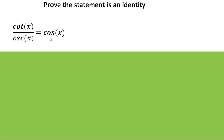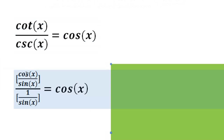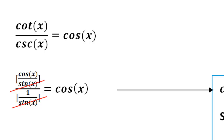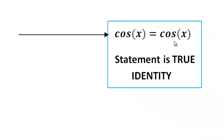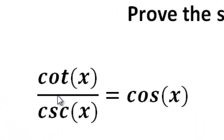There's nothing we can do with the right side, so let's work on the left. Rewriting cotangent as cosine over sine, and cosecant as 1 over sine, a pattern emerges. Multiplying by the reciprocal of the denominator, the sines cancel out, and we're left with cosine of x equals cosine of x — which we know is true. Therefore, this statement is an identity: cotangent over cosecant equals cosine.